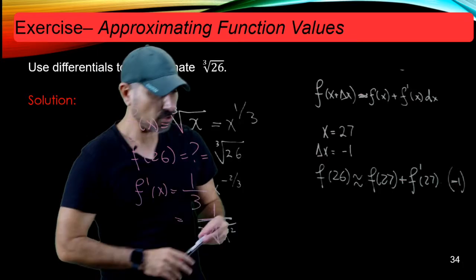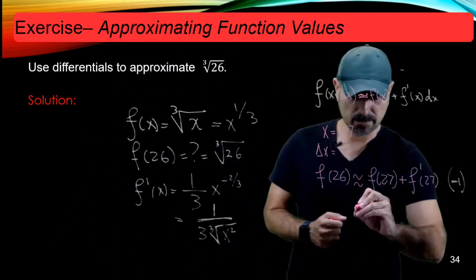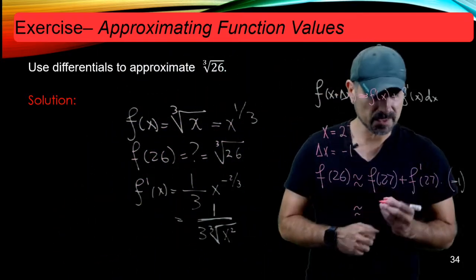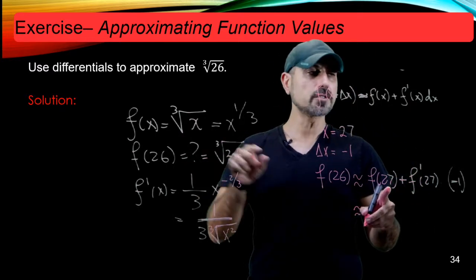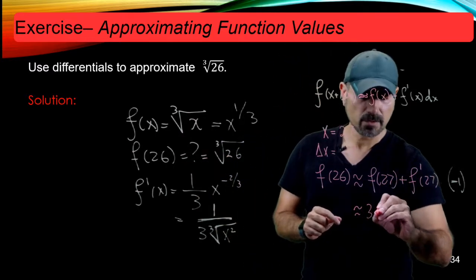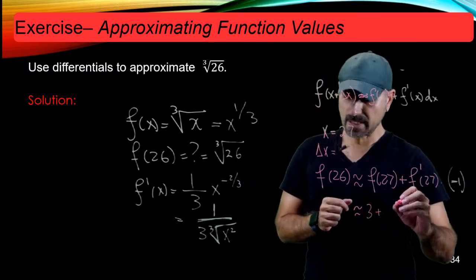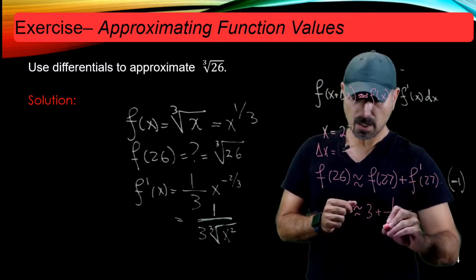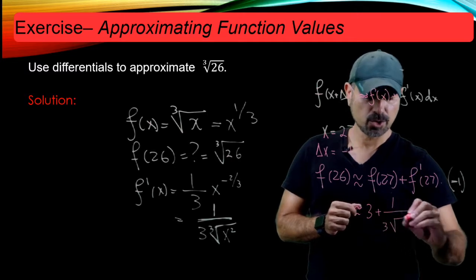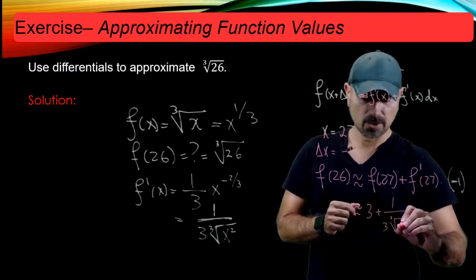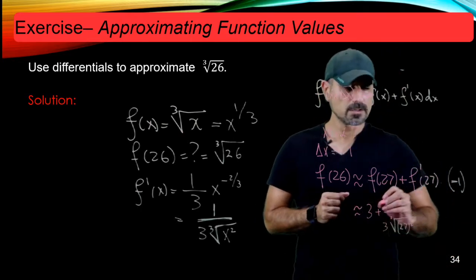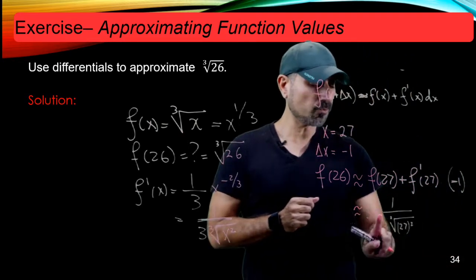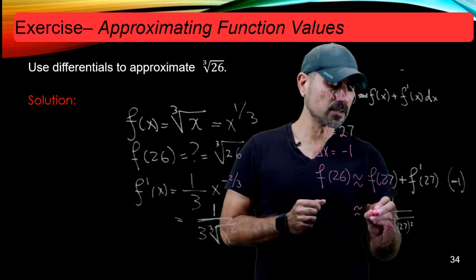We're almost done because all we're going to do here is to see what those numbers spit out. Well, f of 27 is, as I said, cubic root of 27, which is 3. And f prime of 27 is 1 over 3 times... So instead of putting negative 1 there, I'm going to put minus here.